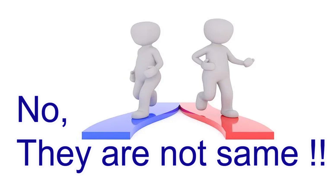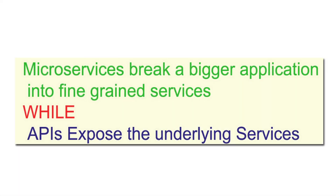APIs and microservices are two different things, and that's what I'm going to explain with some example scenarios in this video. The first thing that makes microservices different from APIs is the basic core concept and purpose of existence of these two. When we talk about microservices, one very common thing explained together with microservices is the architecture they solve. There is a monolithic architecture and then there is a shift from monolithic to microservices architecture — that's where microservices come into the picture.